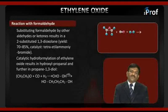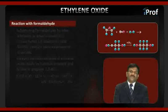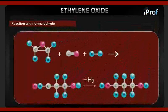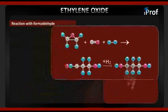The reaction proceeds via: ethylene oxide plus CO plus H2, giving an aldehyde intermediate, which on further reaction in the presence of acid or protons gives the diol product.